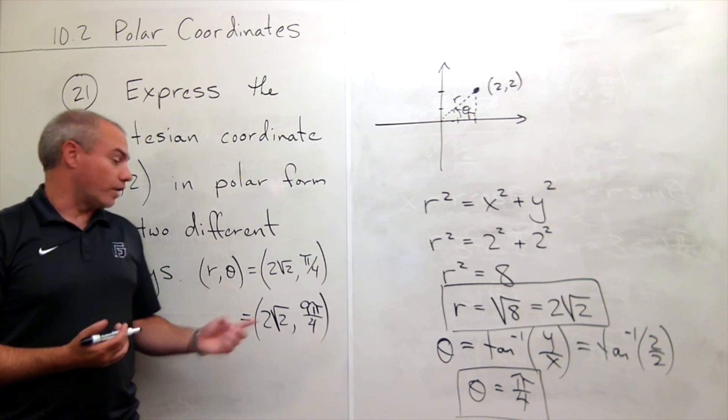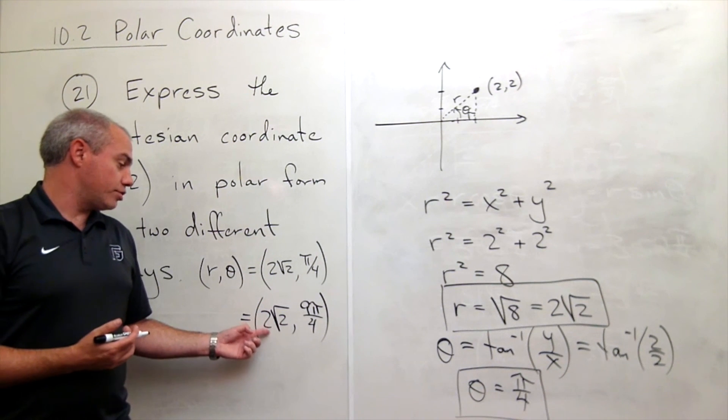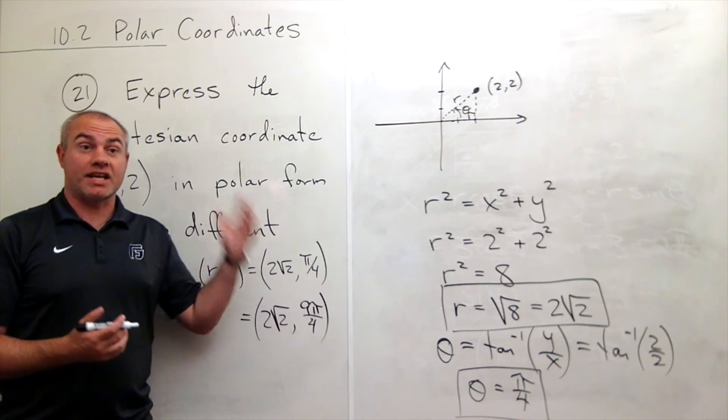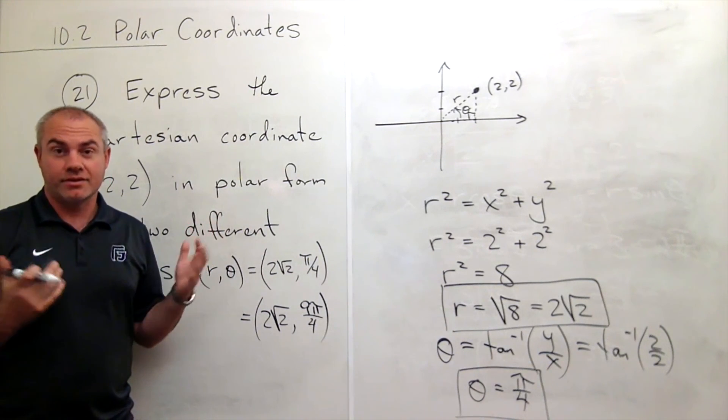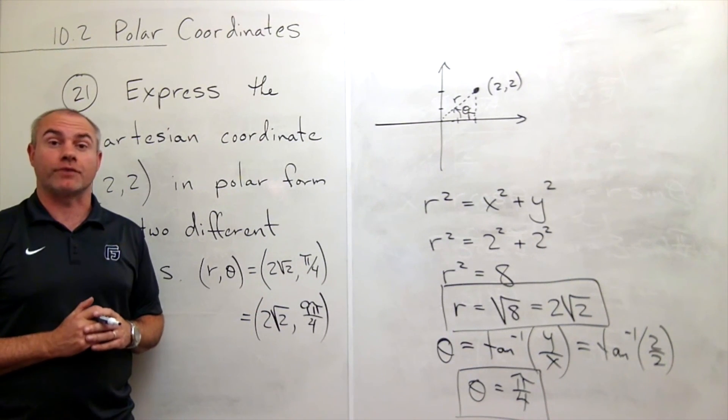Or I could add another 2π to this and write it as 2√2 times π/4 plus any amounts of 2π's. So there's lots of different ways to represent this. Here are two, and that's what we're looking for.